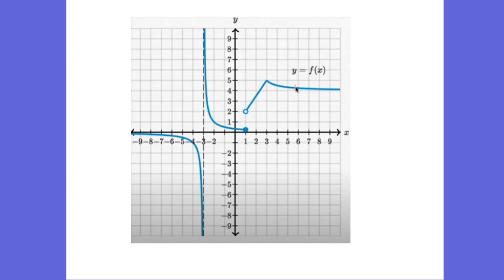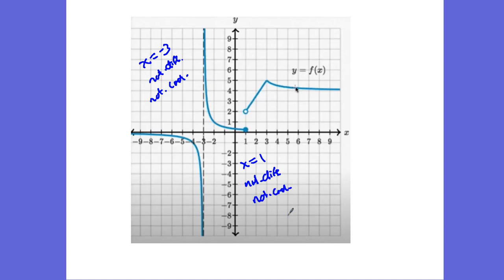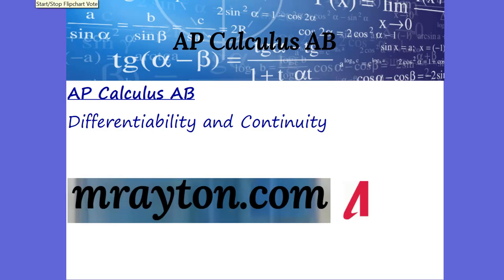Looking at another graph over negative infinity to positive infinity, where are the non-differentiable points? At x equals negative 3 we're not differentiable because it is not continuous. At x equals 1 we are also not differentiable because we are not continuous there. At x equals 3 we're not differentiable because there is a sharp turn — a cusp. The slopes are all positive approaching from one side, then become negative, so it's not differentiable. And that is connecting differentiability and continuity.